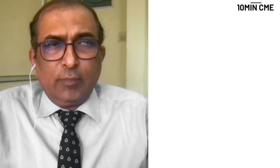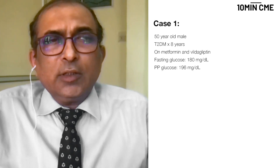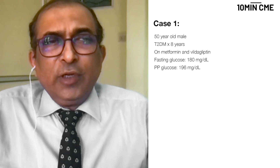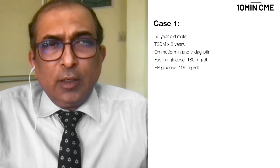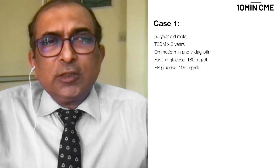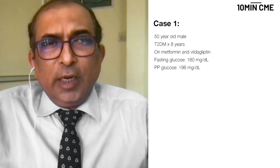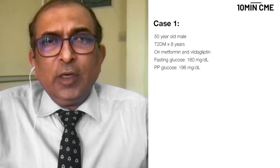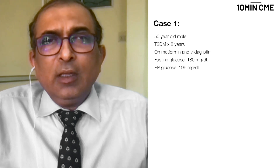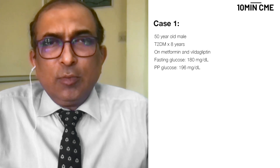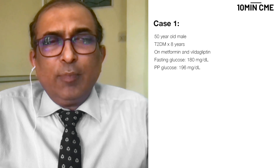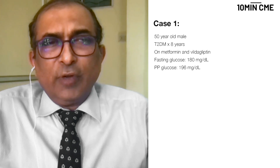In the first case, we have a 50-year-old gentleman who has type 2 diabetes for 8 years and who has been on metformin and vildagliptin, with a fasting plasma glucose of 180 and a post-prandial glucose of 196.